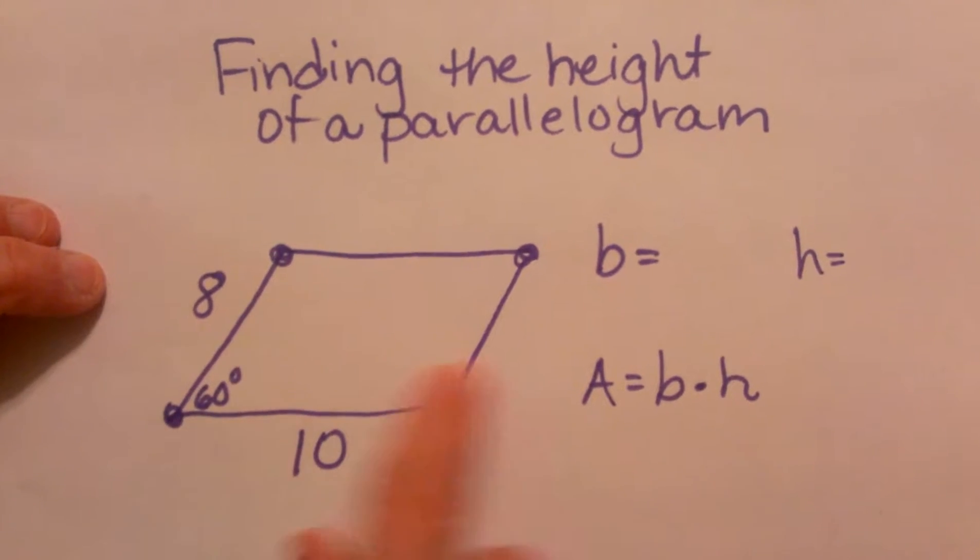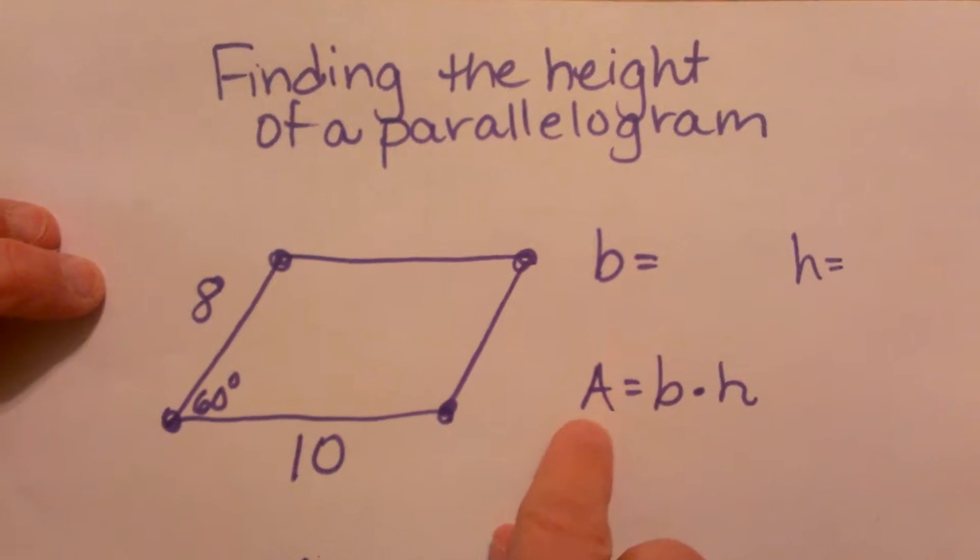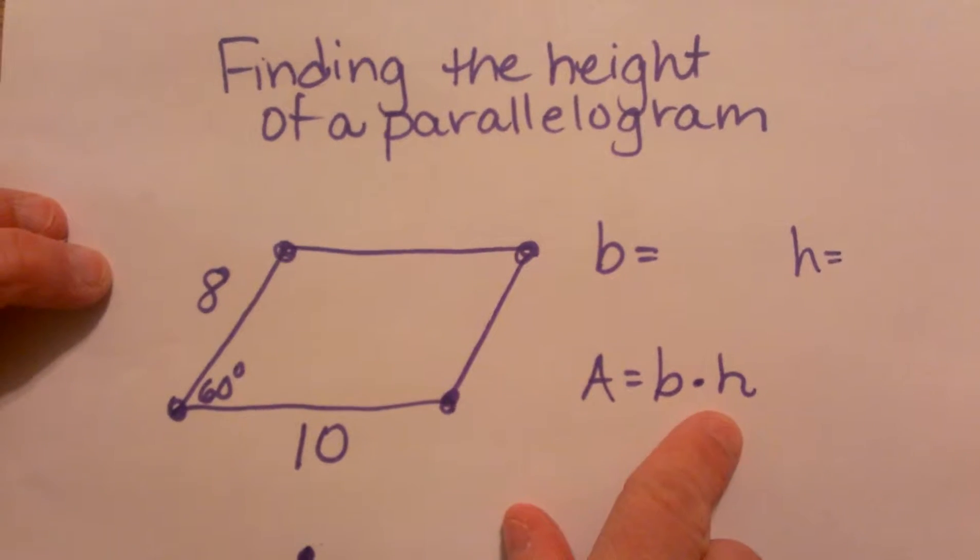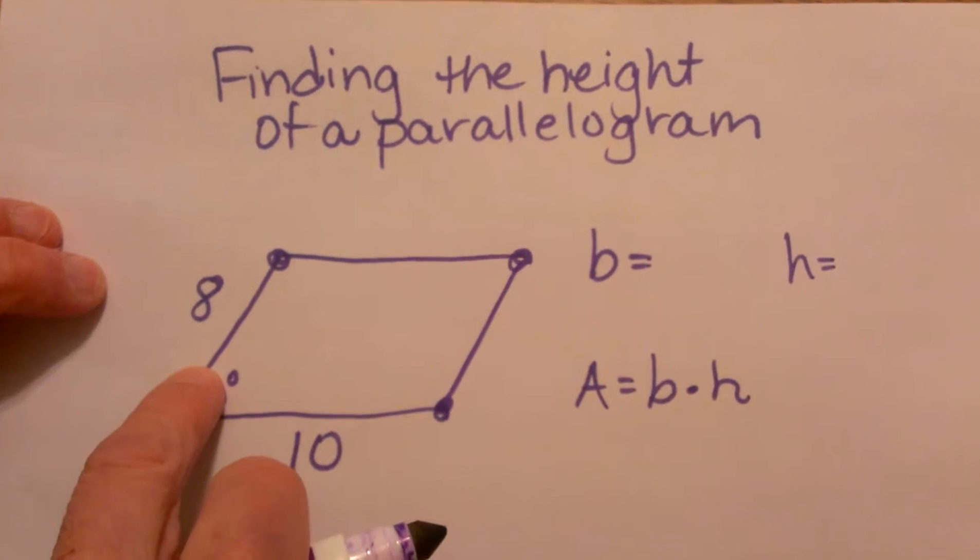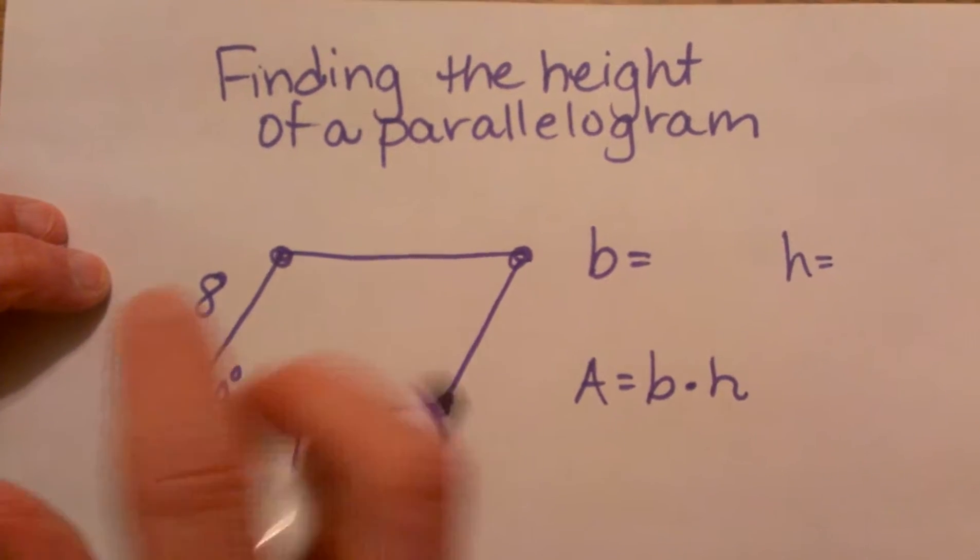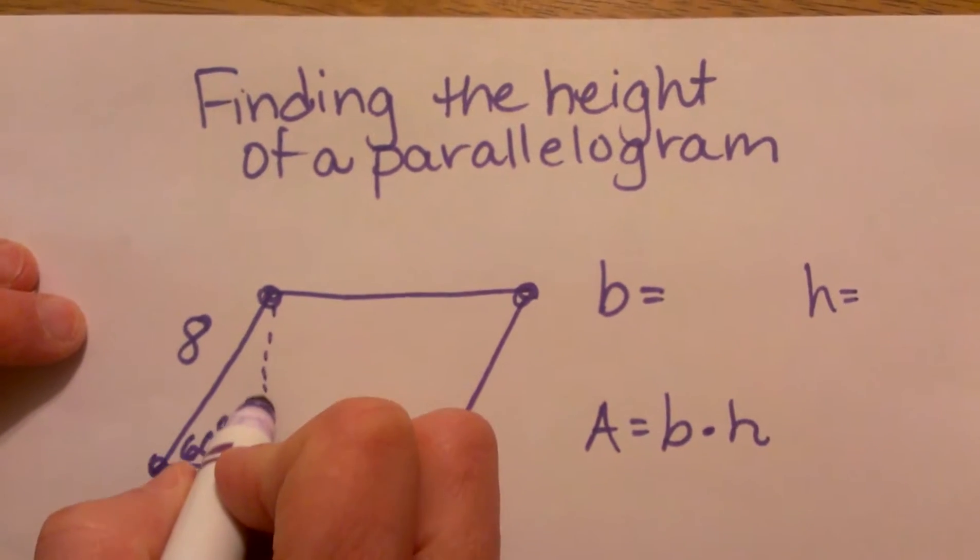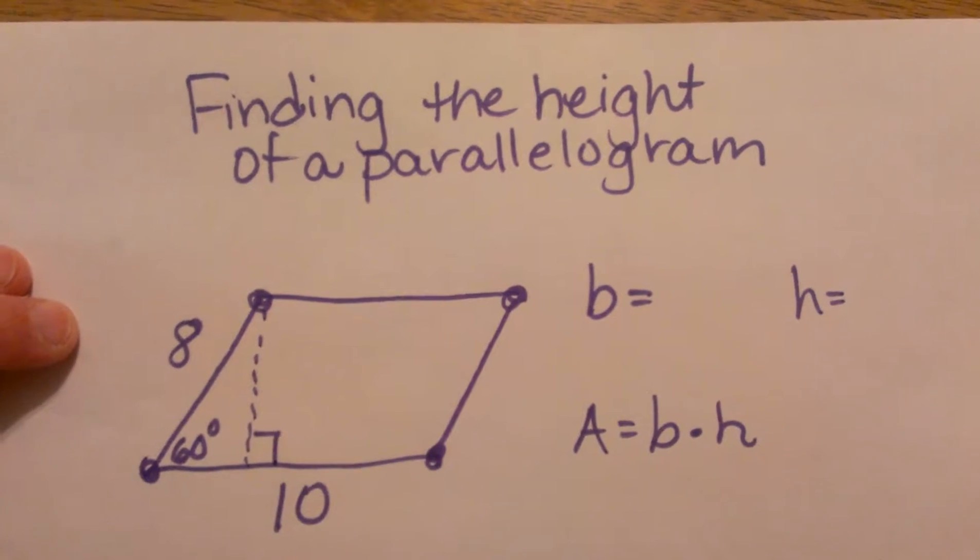Let's see what we have. To find the area, remember we need the base and the height. In this case I have a base and a side of 8, but that's not my altitude. So I have to draw in the altitude.